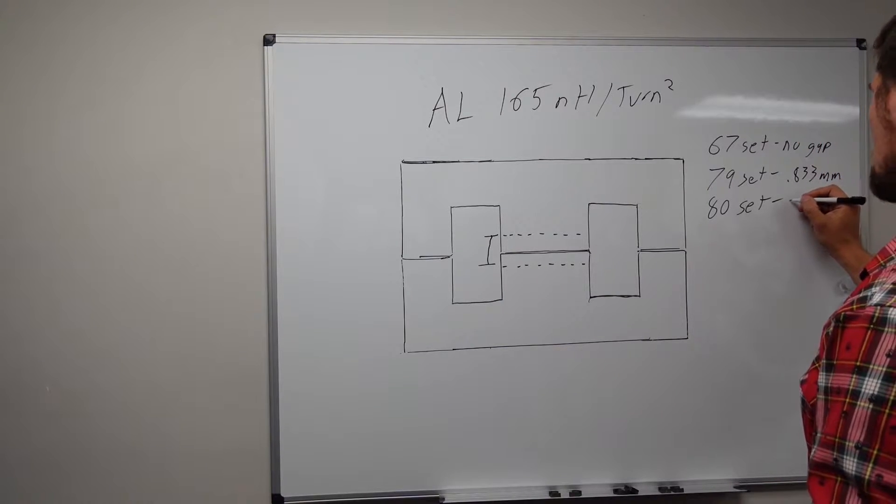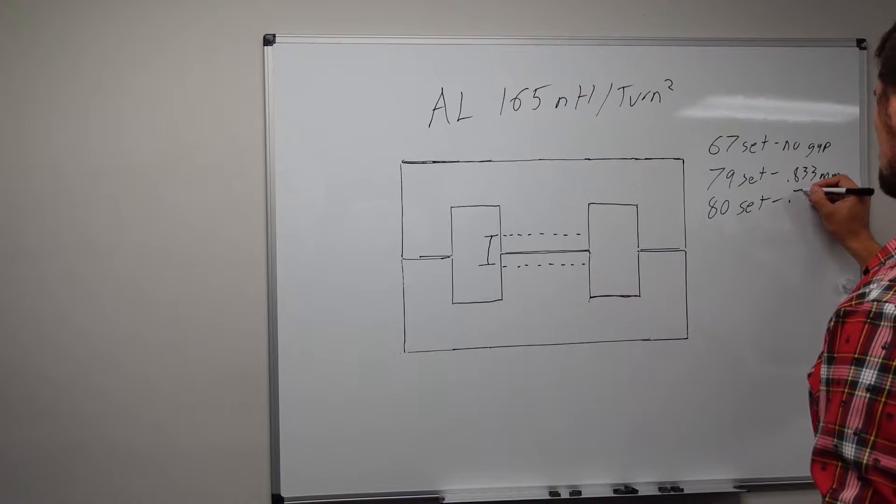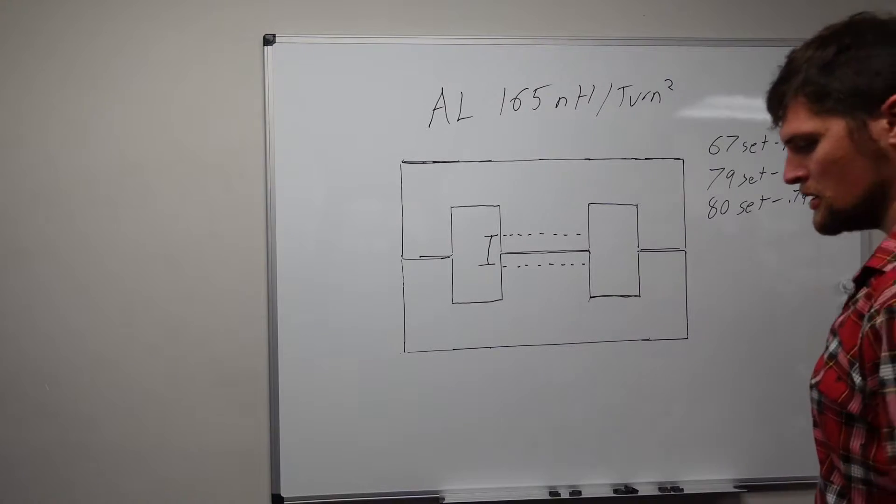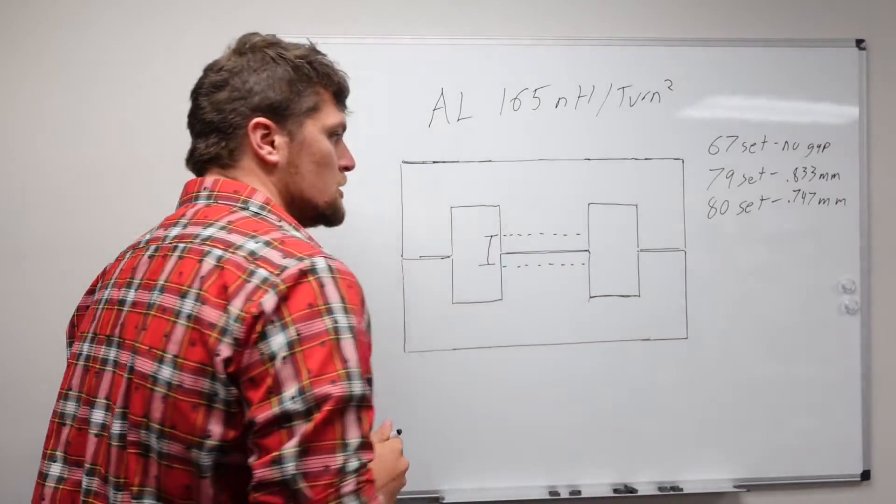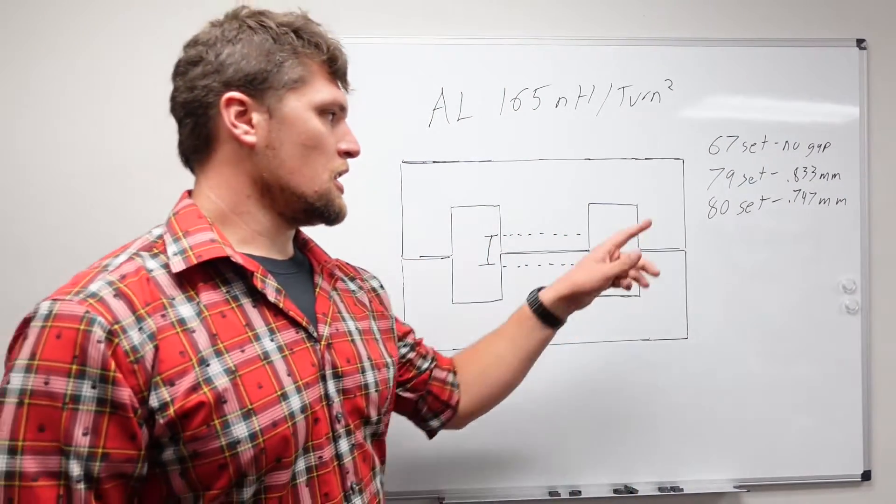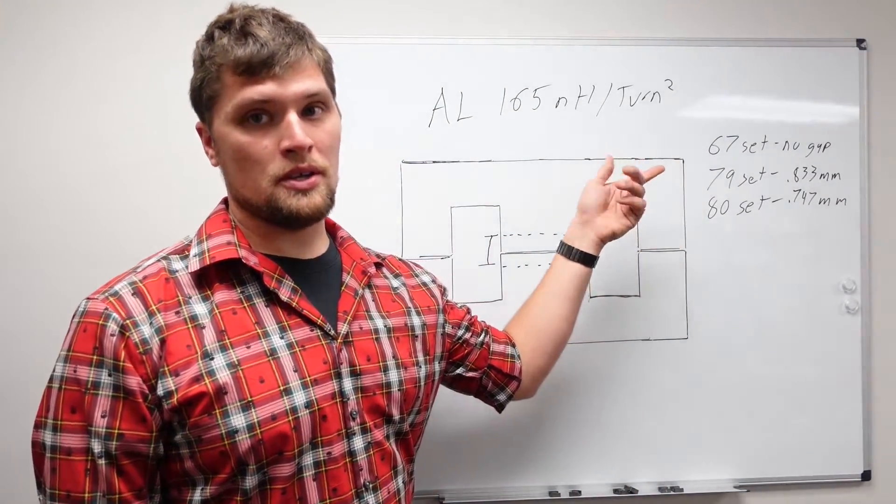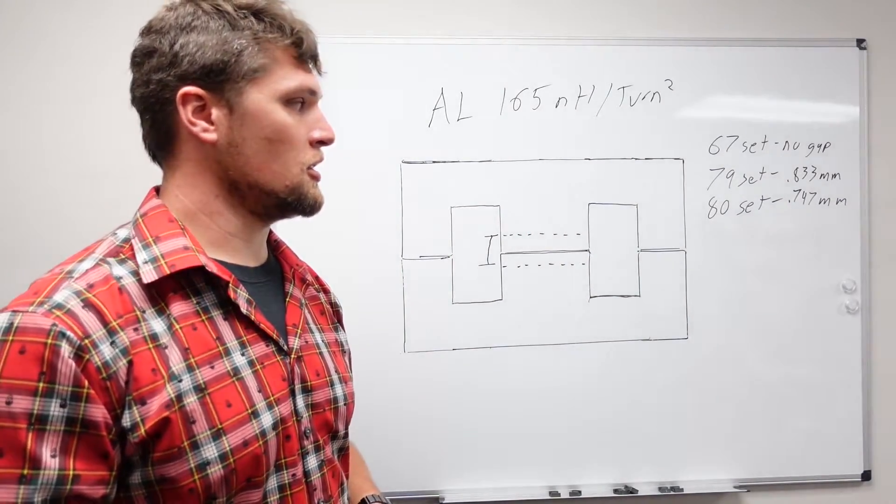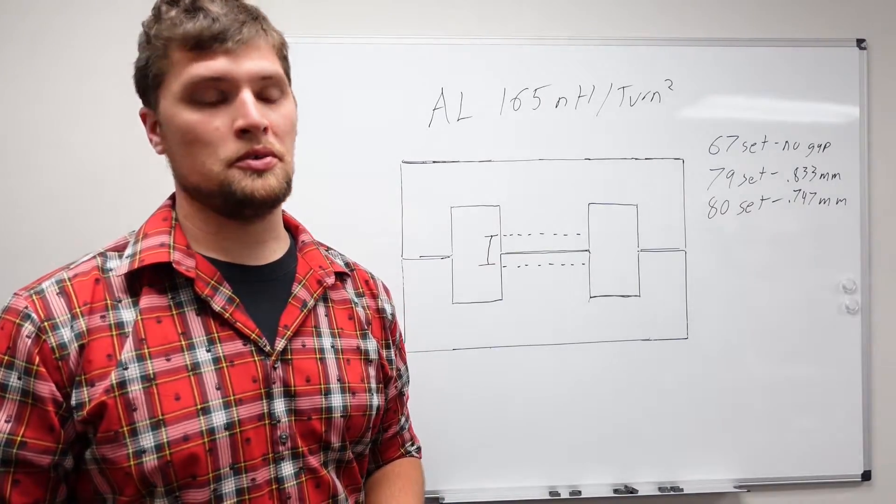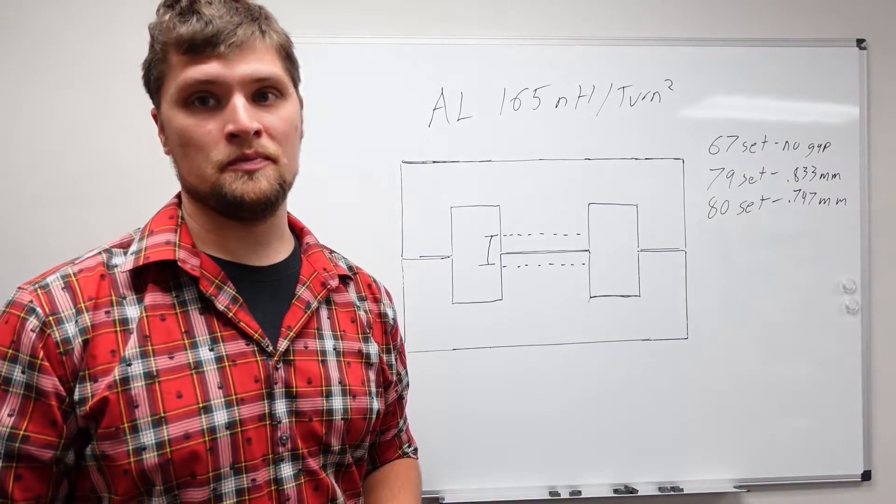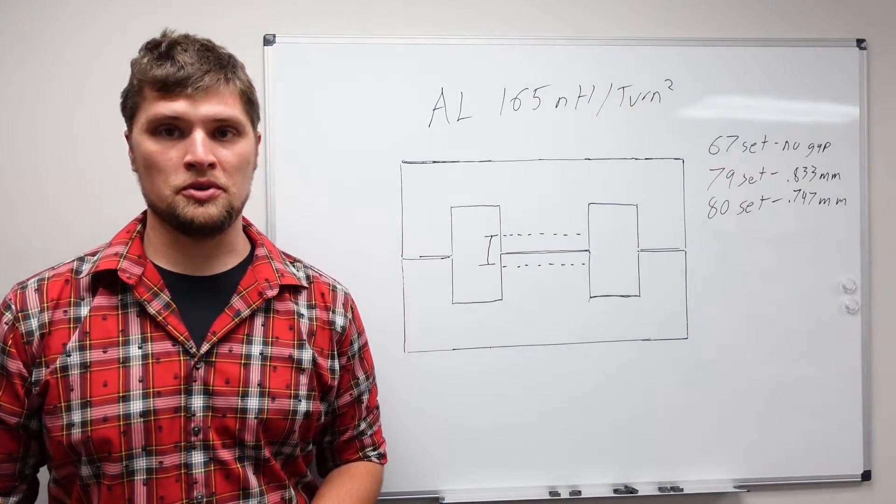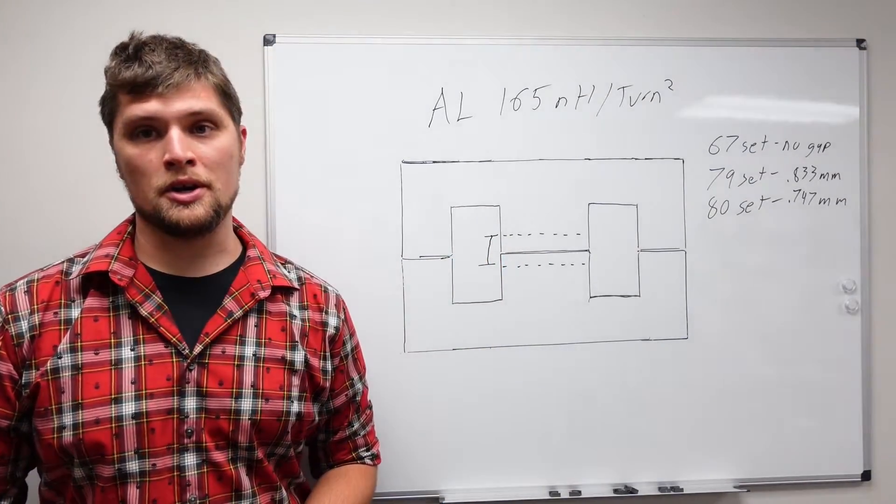Our 80 set, we wound up with a gap length of 0.747 millimeters. So 79 material of these three is the highest permeability material, so it's going to require the largest gap in order to get to that AL value. 80 material is between 67 and 79 material in terms of initial permeability, so the gap it requires is smaller.